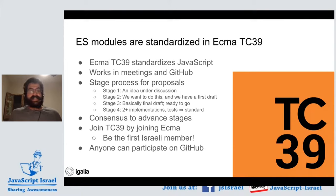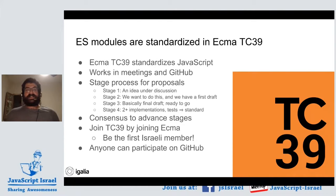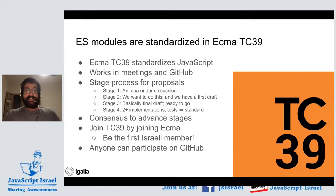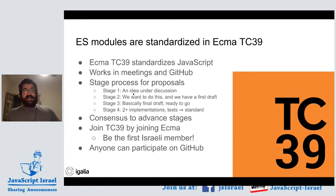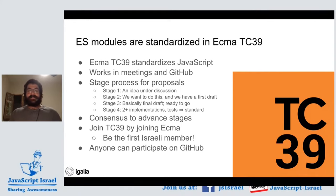We have a four-stage process for new language features. In stage one, an idea is under discussion. In stage two, we decide as a committee we want to do this and we have a first draft. At stage three there's a final draft and it's ready for implementations. Before stage three we'll often have early prototype implementations, especially in transpilers and polyfills. After stage three we'll have implementations in more conservative environments like web browsers and TypeScript. Once something has two full implementations and tests, we can promote it to stage four and it becomes part of the draft standard.